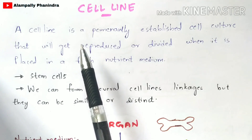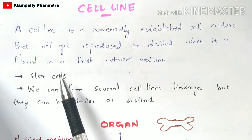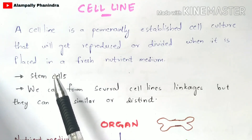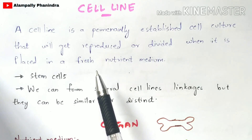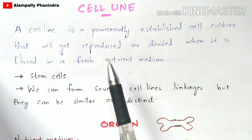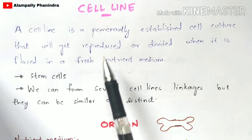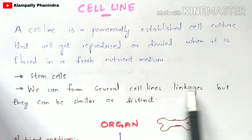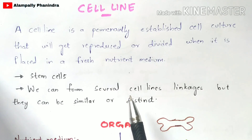One important thing to remember about cell lines is that stem cells are majorly used. Stem cells will be extracted from tissues and are of two types: embryonic stem cells and adult stem cells. Many people choose embryonic stem cells for proper preparation of cell lines because numerous cell lines can be produced from embryonic stem cells, whereas adult stem cells produce only a few cell lines.